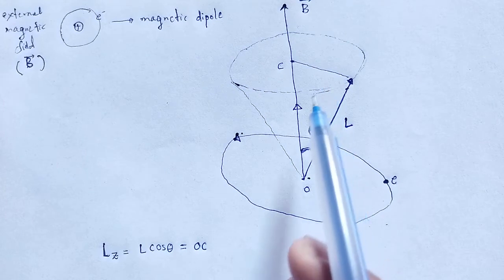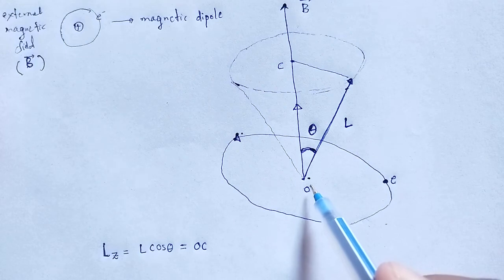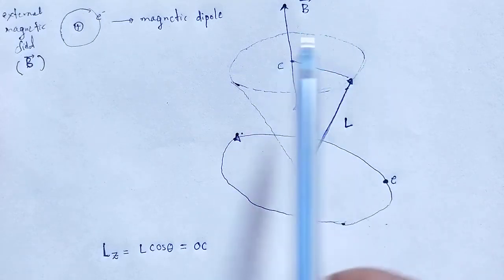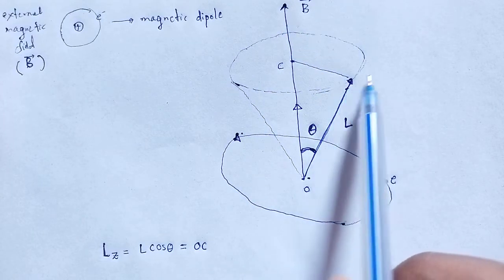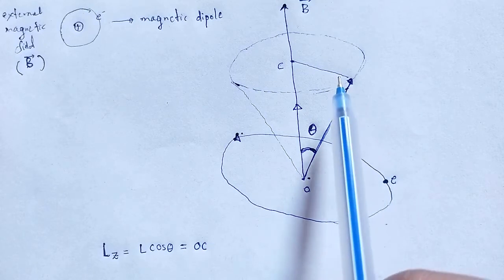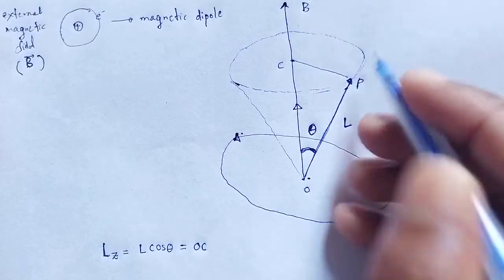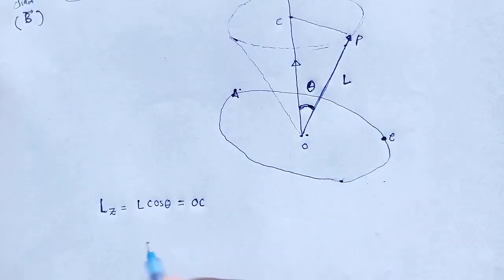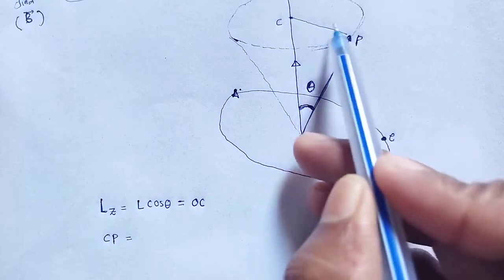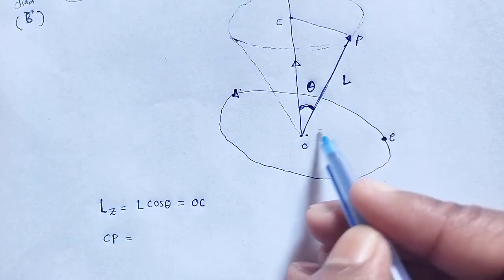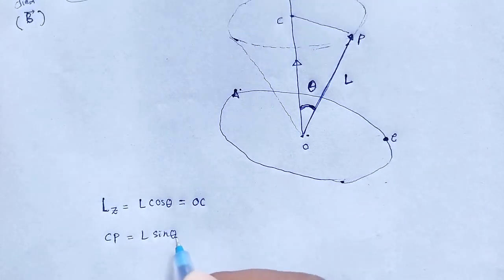The centre of the electron orbit is O, but due to the presence of the magnetic field B, a new centre of the orbit C is formed, and the radius is CP. The value of that radius CP is equal to L sin theta.